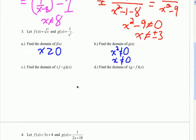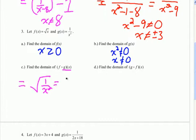Let's try number 3. Start with f of g of x. What's the domain of g of x? Because it's a rational function, the denominator can't equal zero. Setting it equal to zero and taking the square root of both sides, we get x can't equal zero. So zero is definitely excluded. Now we compose: plugging g of x into f of x gives the square root of 1 over x squared. Taking the square root of numerator and denominator gives 1 over x. Since the denominator can't equal zero, we again get x can't equal zero — the same as the initial restriction.